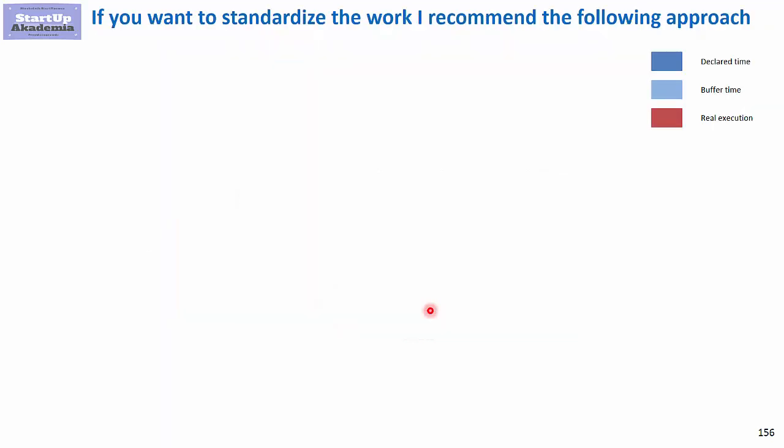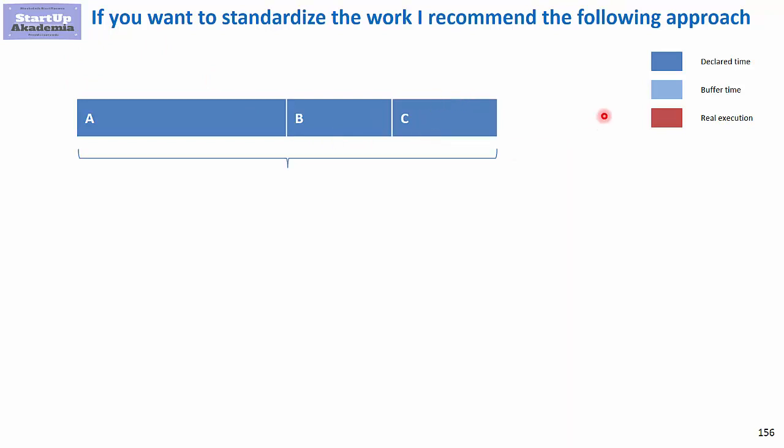So basically in critical chain, what they say is that usually when you ask people how long it will take them, they quote some time. So let's say we have a project consisting of three activities: A, B, and C. If we assume that they are serious people and they know how long it takes, we could assume that the whole thing should take this amount of time.